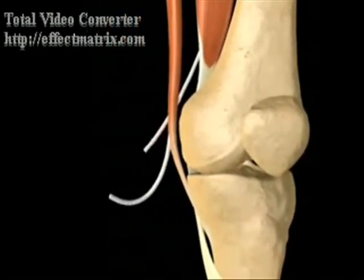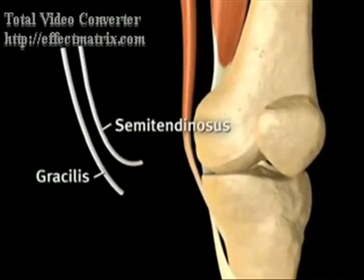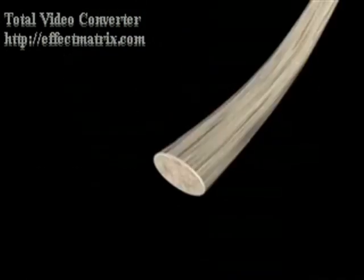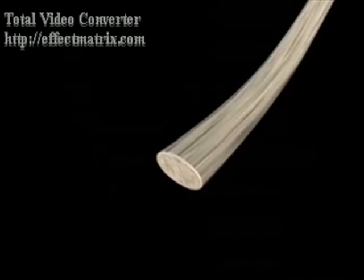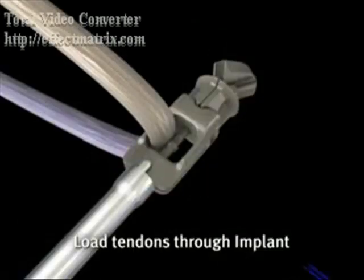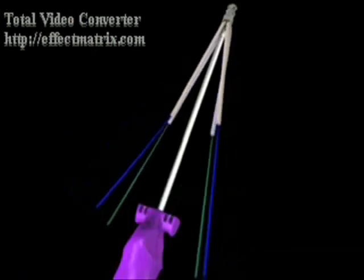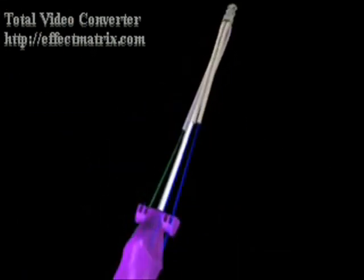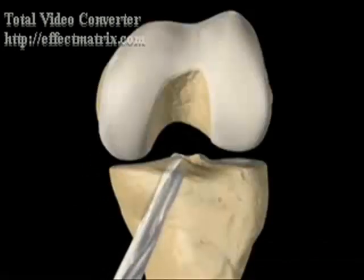The hamstring tendon, another autograft option, offers a lower rate of donor site morbidity. The dimensions of this graft are more comparable to the ACL and withstand high ultimate tensile load. However, there is difficulty in healing and a lack of rigid fixation with the hamstring.